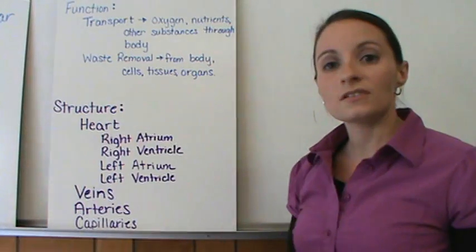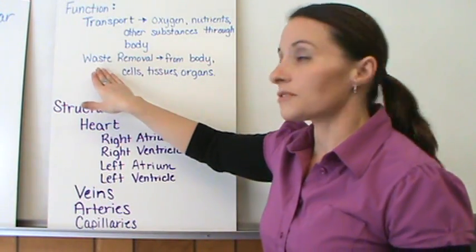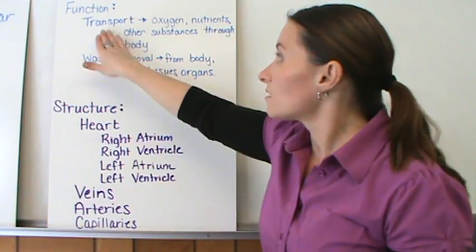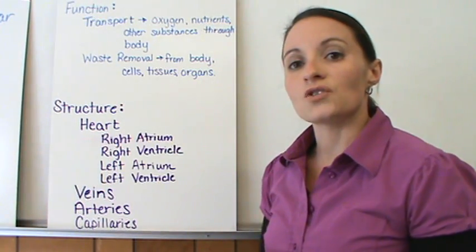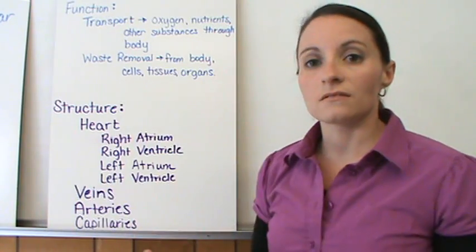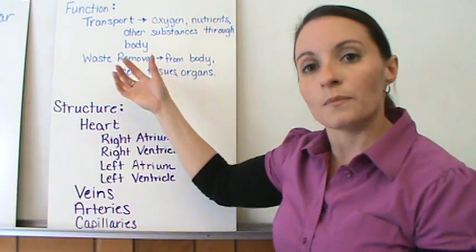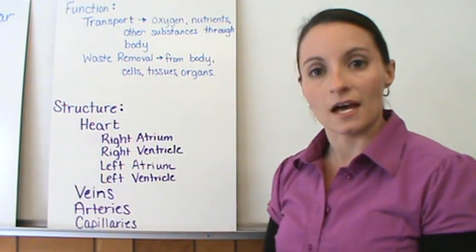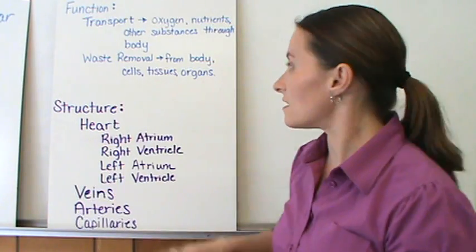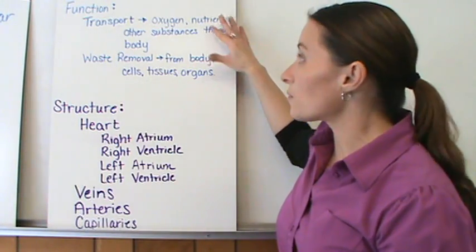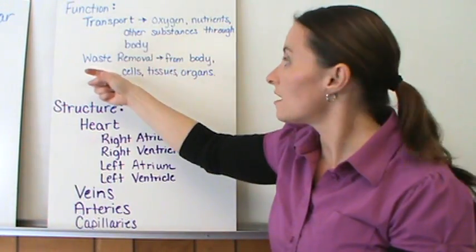The major function of the cardiovascular system is the transport of things throughout your body. It transports nutrients, oxygen, and other things that need to go throughout your body. It also transports waste — pulling that waste out of your cells, tissues, and organs, and moving it through to your kidneys where it can be removed. So the major functions are transport of things and waste removal.